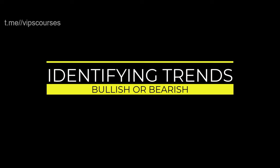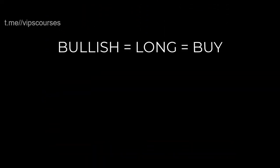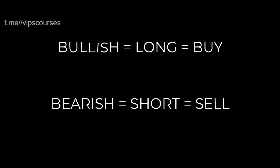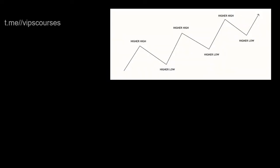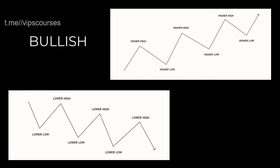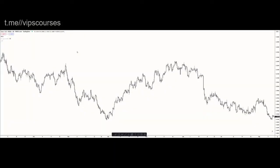Determining the current trend is important for us to know whether we should be looking to long (buy) or short (sell). A market is either making higher highs and higher lows, meaning the trend is bullish, or it's making lower lows and lower highs, which means the trend is bearish. It's as simple as that.